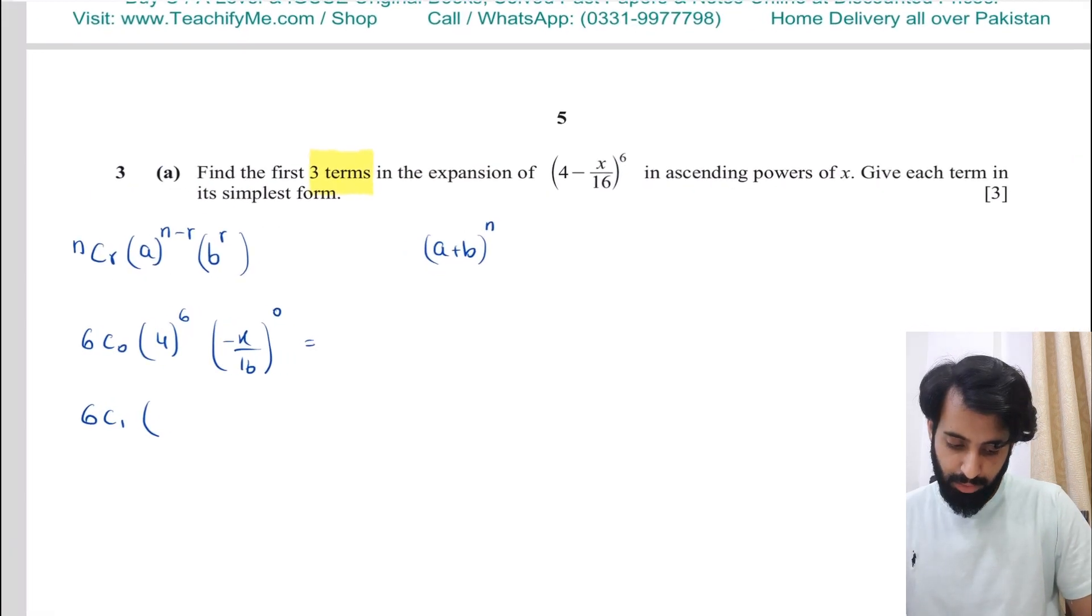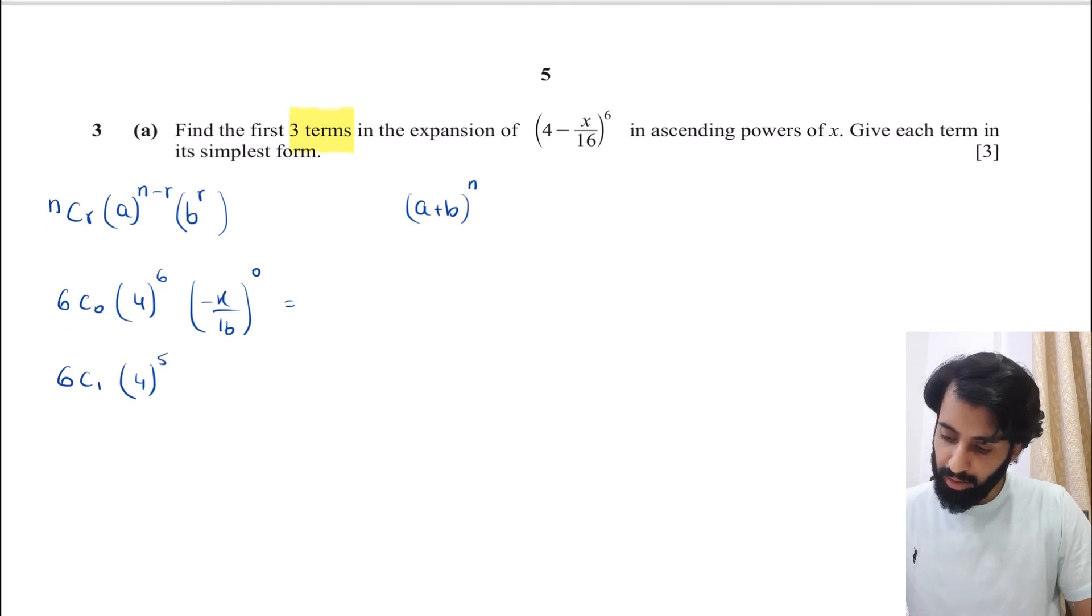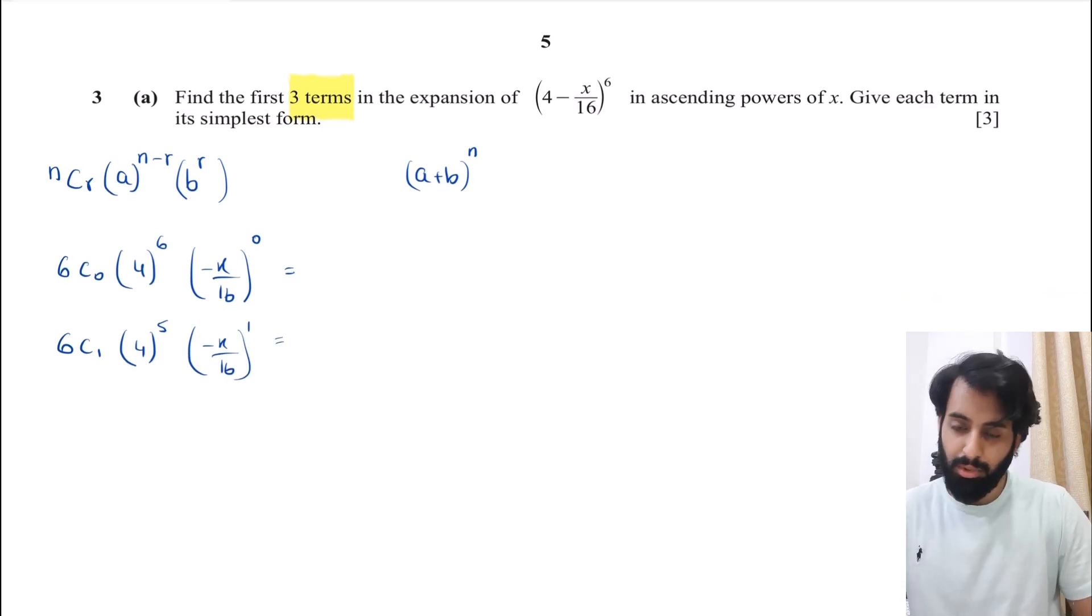So 6C1 × 4^(6-1=5) × (-x/16)^1. We'll find out what that is. And then for the third term, 6C2 × 4^(6-2=4) × (-x/16)^2. All right. Now pick up your calculators.